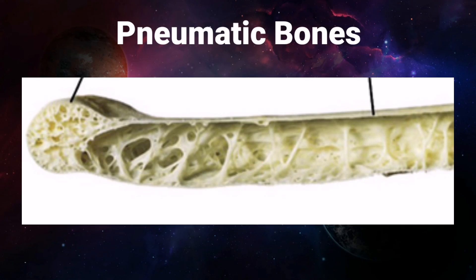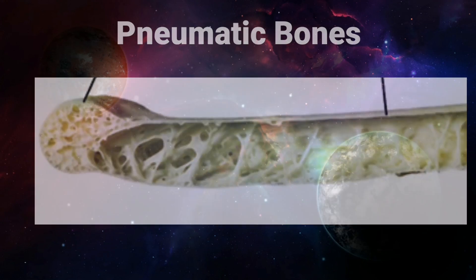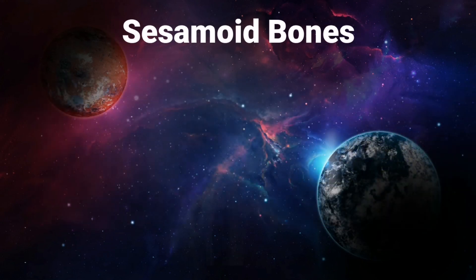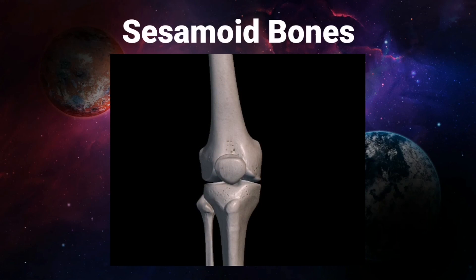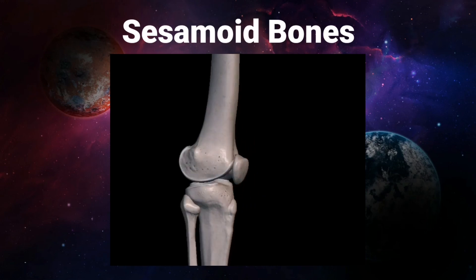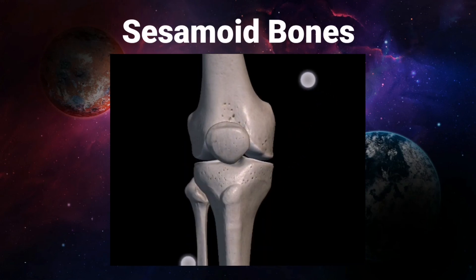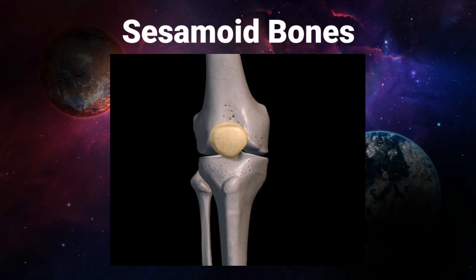Pneumatic bones are irregular bones having large air spaces. These air spaces make these bones light in weight. Examples include the maxilla, sphenoid, and ethmoid bones. These are mostly present in the human skull.